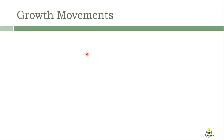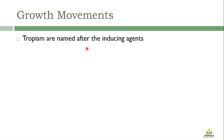Welcome to Botanica. We have discussed about the different types of plant movements present in plants. We were discussing about growth movements. As far as tropism is concerned, we have discussed about phototropism, geotropism, and many other types of tropisms. Generally, we call it a tropism mechanism - either phototropism, geotropism, or hydrotropism. These are named after the inducing agent.